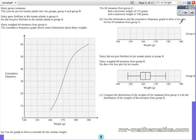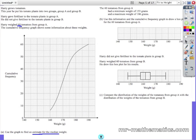So this question is about cumulative frequency and we have been asked firstly to find the median out of a sample of 60. So the median value will be the 30th.